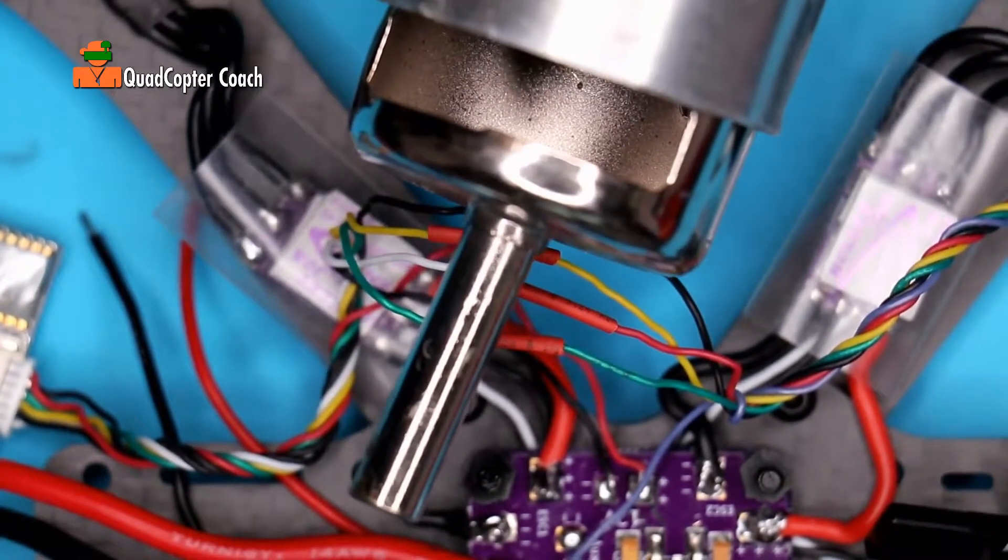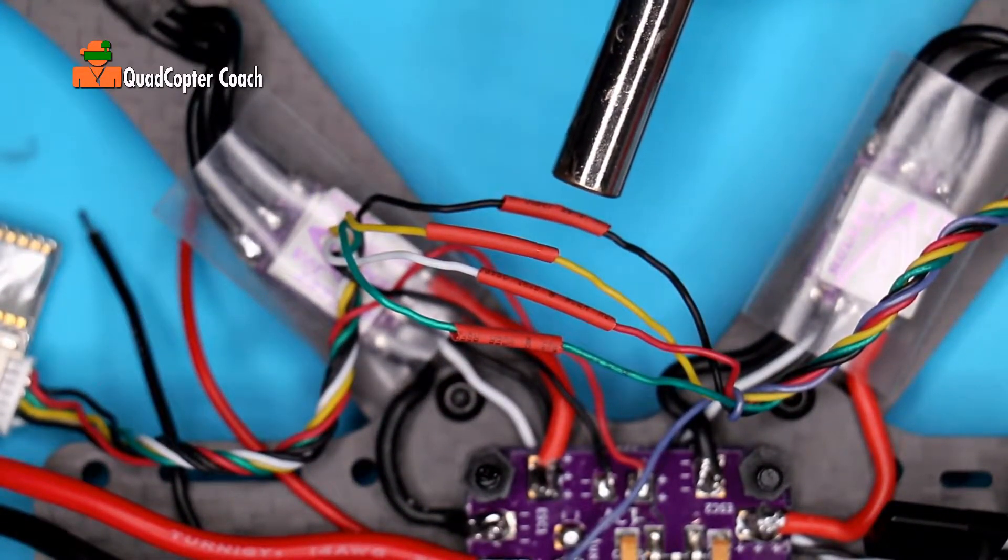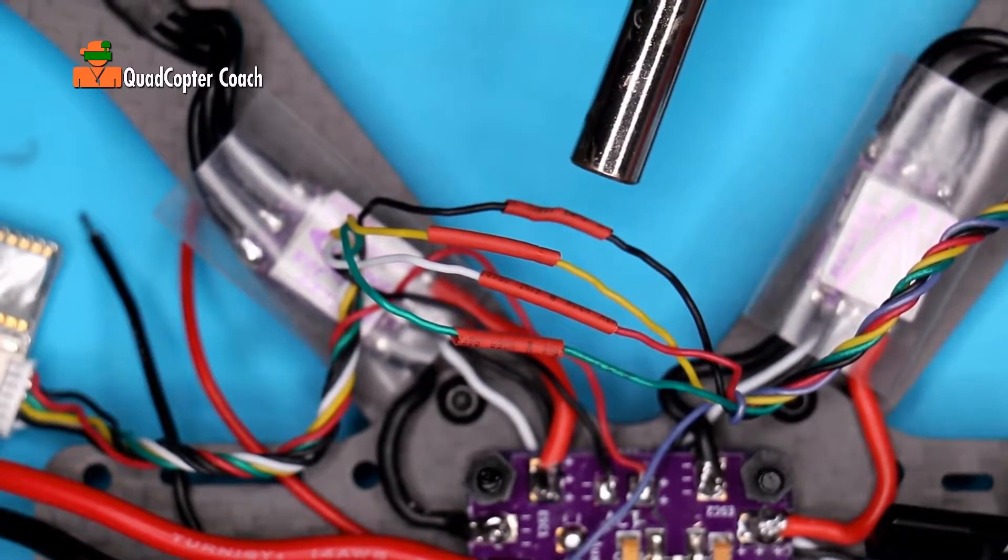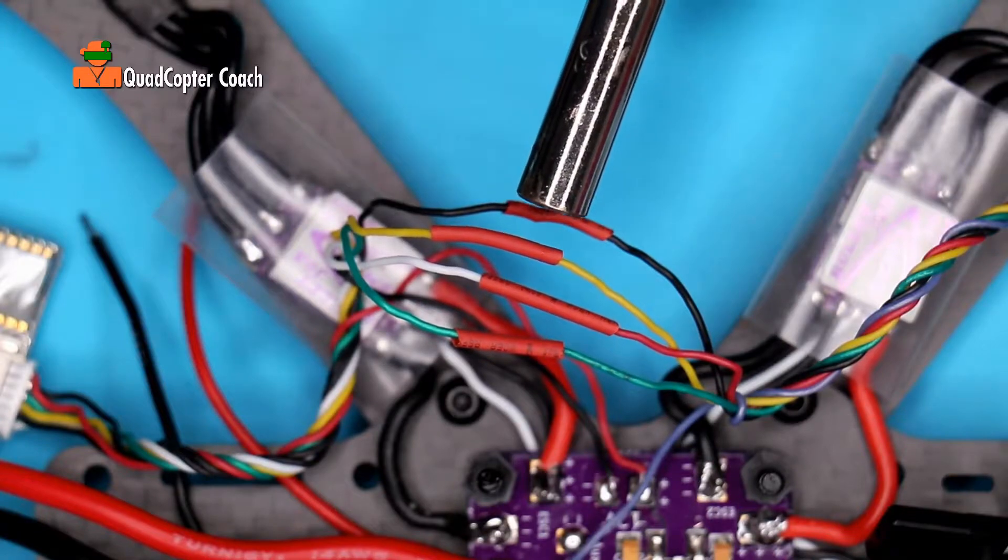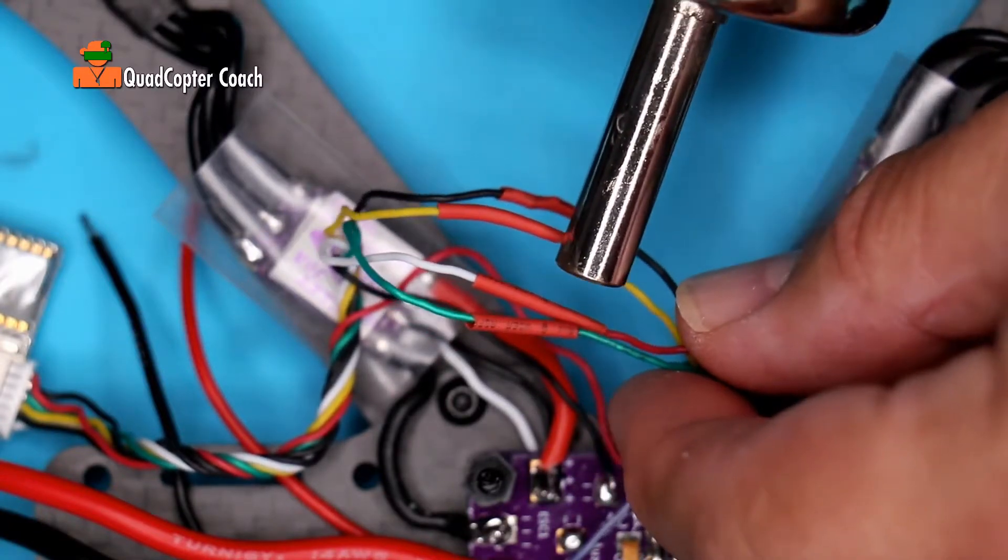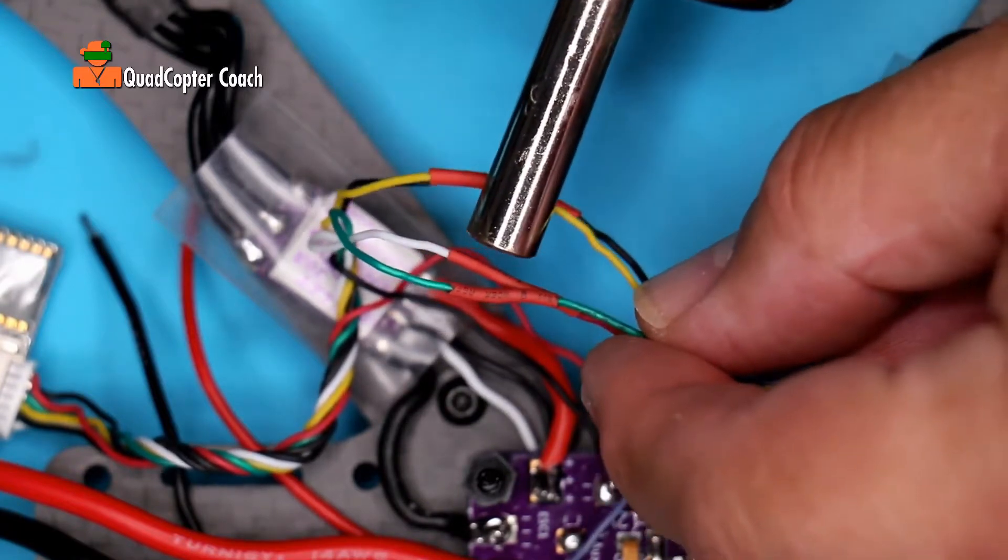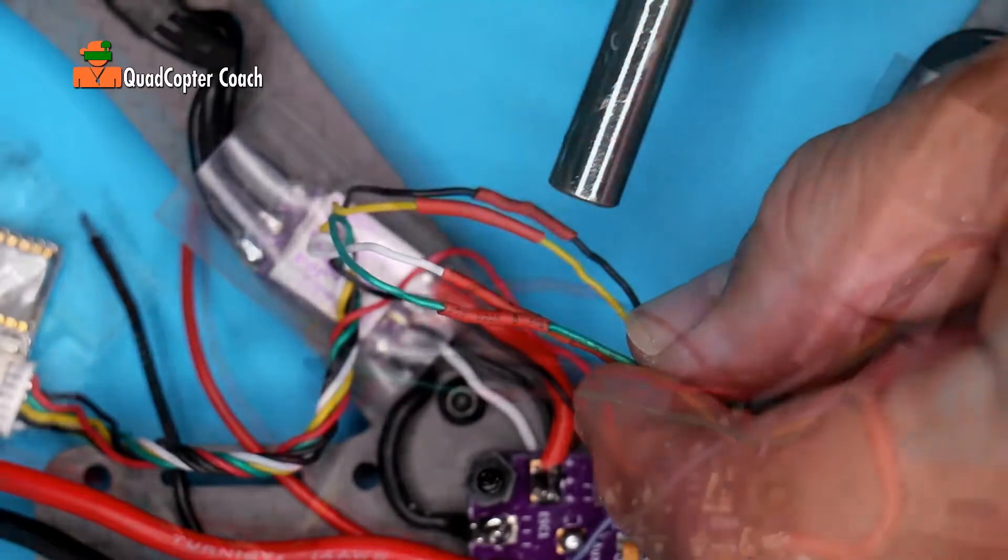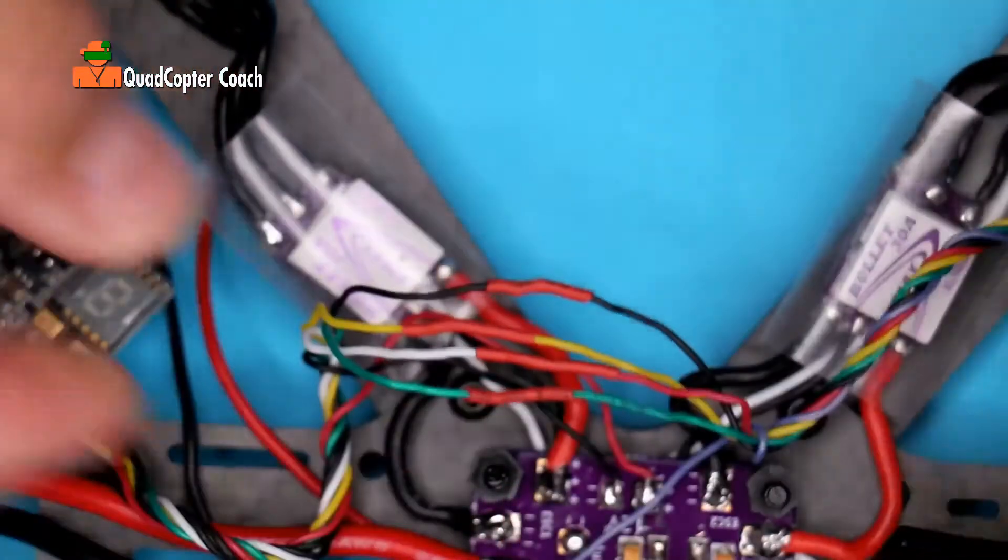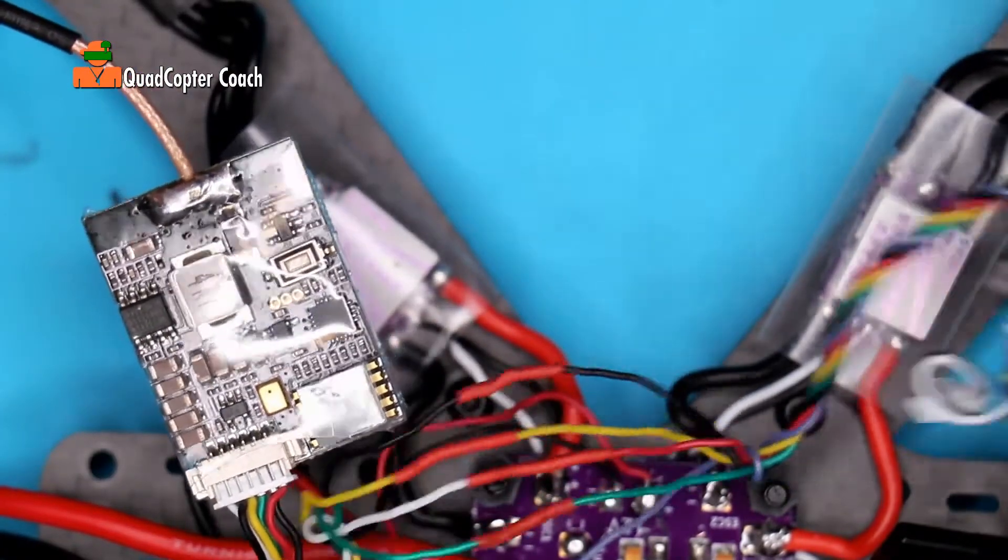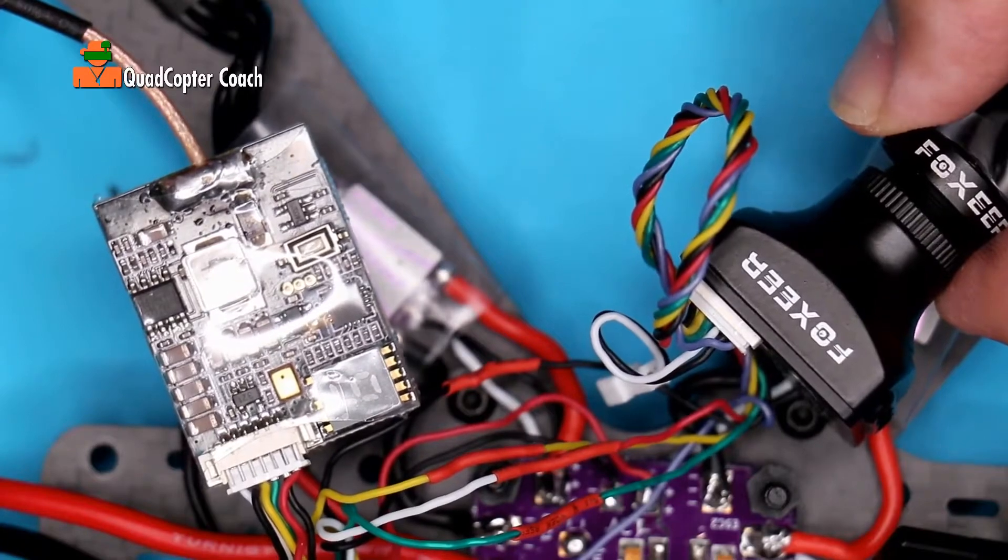Take your heat gun and shrink down your tubes. Those shrink tubes should not move now and all those wires are insulated. Your video transmitter and video camera are now fully connected for video, audio, and power.